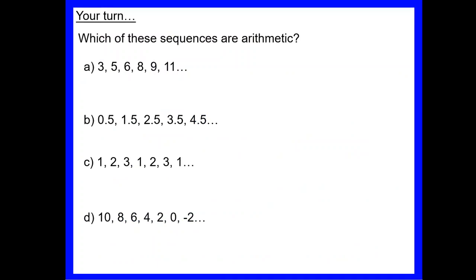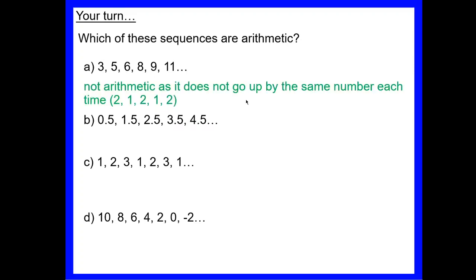Your turn now — decide for each sequence whether it is arithmetic or not. Looking at the first one: from 3 to 5 we're adding 2, from 5 to 6 we're only adding 1, from 6 to 8 is adding 2, then adding 1. We're not adding the same amount each time, so no, it's not an arithmetic sequence.